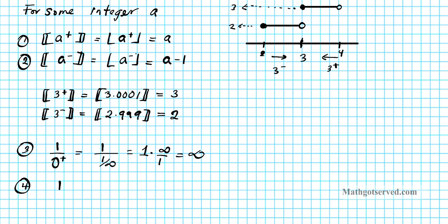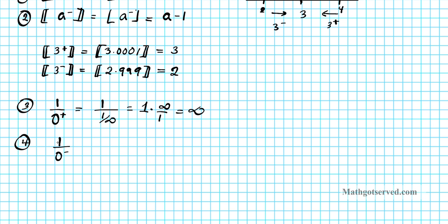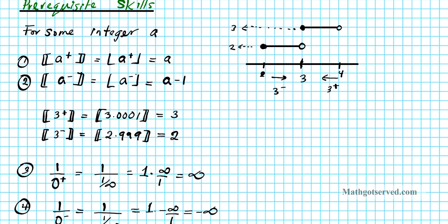Another point to note: what if you divide one by an infinitely small negative number? That is basically approaching zero from the left, written as one divided by negative infinity. Dividing one by negative infinity gives an infinitely small negative number, and multiplying by the reciprocal gives negative infinity. Keep these points in mind because we will be using them in the examples.